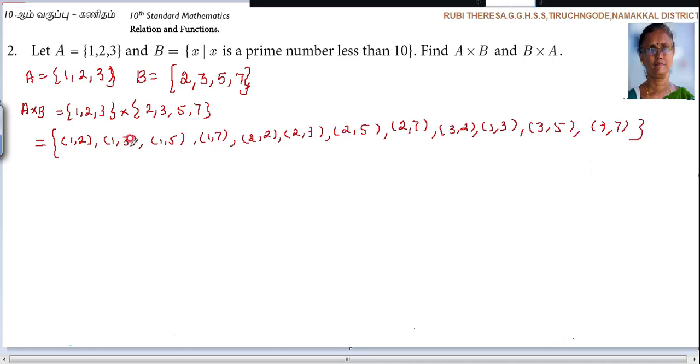So whether your answer is correct or not, you can check very well. How? The cardinal number of A. What is the cardinal number of A? 3. What is the cardinal number of B? 4. So 3 times 4 is 12. So how many pairs should be there? 1, 2, 3, 4, 5, 6, 7, 8, 9, 10, 11, 12. So your answer is correct.